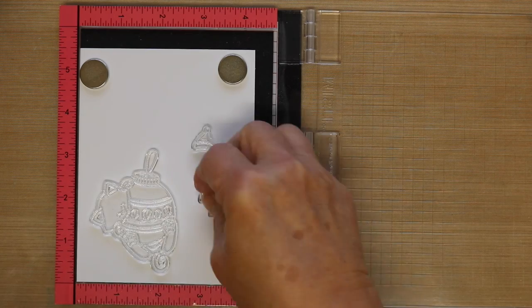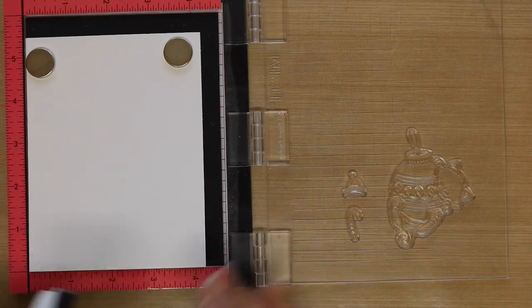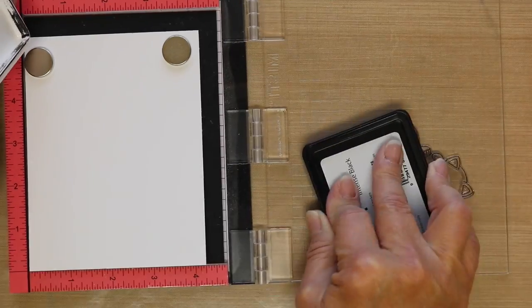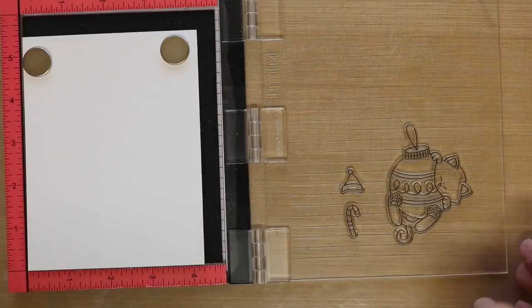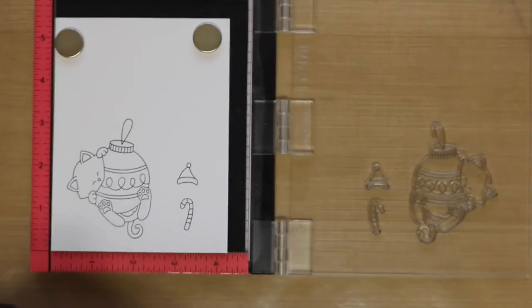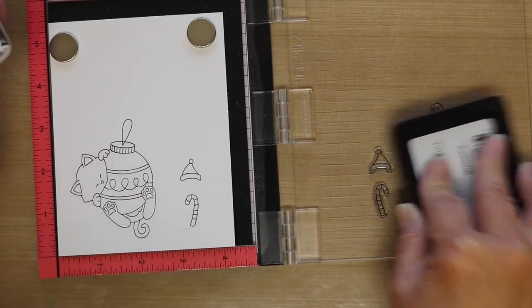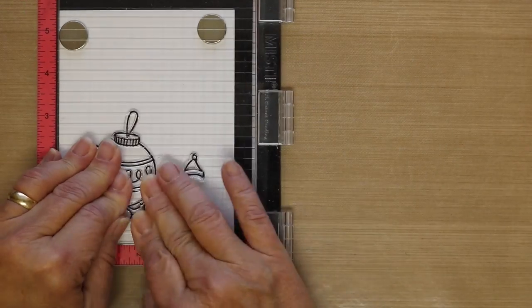So I have my Neenah 110 lb cardstock and my MISTI and I'm going to use some Simon Says Stamp Intense Black Ink to stamp the image and I'm going to do that twice just so I can make sure I get a good crisp image.